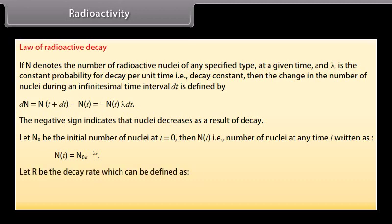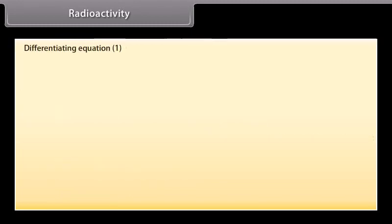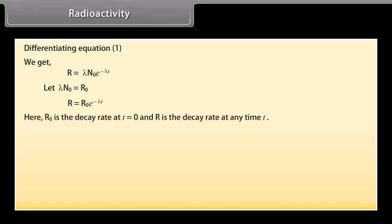Let R be the decay rate which can be defined as R is equal to minus dN by dT. Name it as equation 1. Differentiating equation 1, we get R is equal to λN₀e raised to the power minus λT. Let λN₀ equal to R₀. R is equal to R₀e raised to the power minus λT. Here R₀ is the decay rate at T is equal to zero and R is the decay rate at any time T.